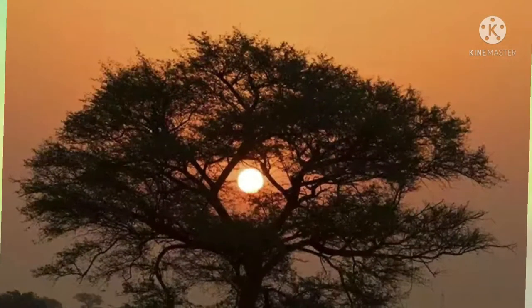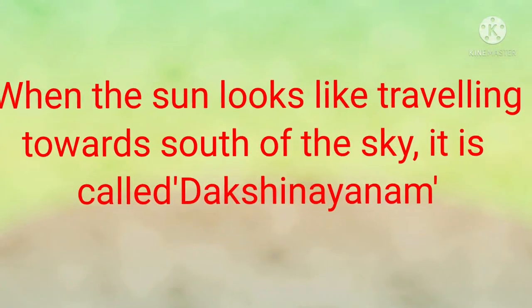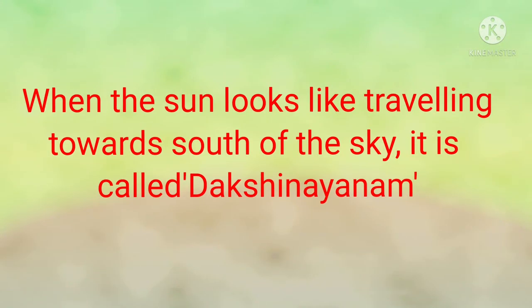Does the spot of sunrise change? If it does, in which direction does it seem to move? When the sun looks like it is traveling towards the south of the sky, it is called Dakshinayanam. Remember children, when the sun looks like traveling towards south of the sky, it is called Dakshinayanam.